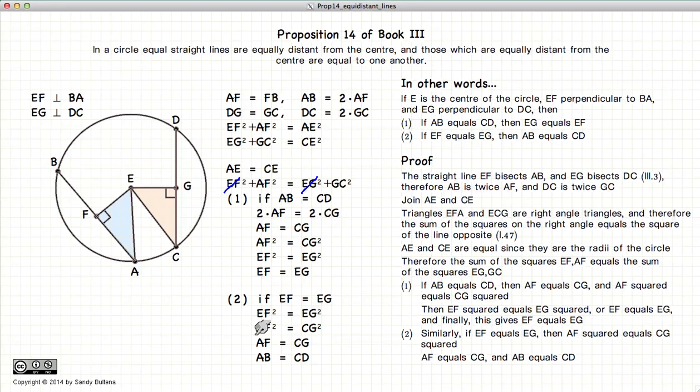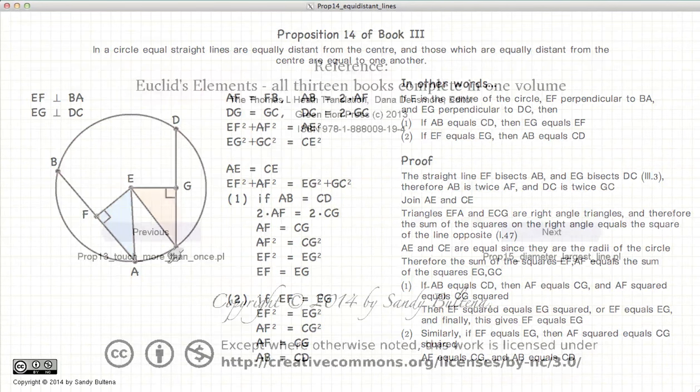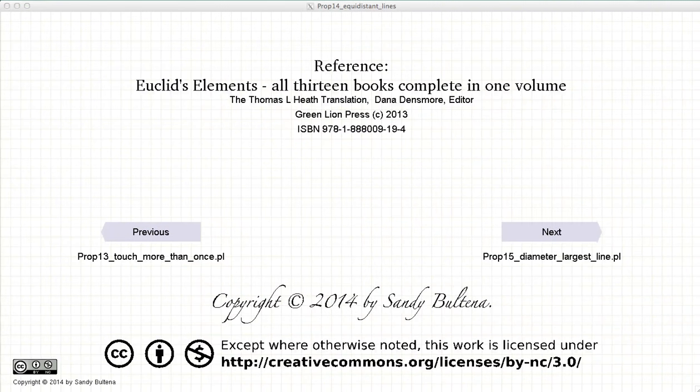And since AF is equal to twice AB and CG is equal to twice CD, we end up with AB is equal to CD. So we have AB is equal to CD. So here we have proved the second part of the proposition, which is that if EF is equal to EG, then AB is equal to DC. And thus we have shown this proposition to be true. And that concludes this video presentation. To see the next presentation, just click the next button.